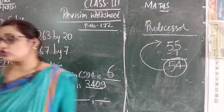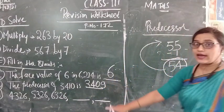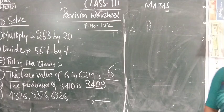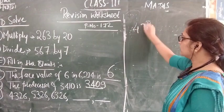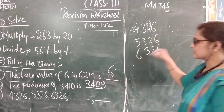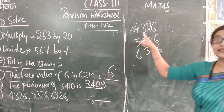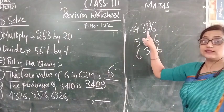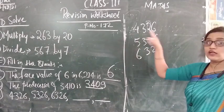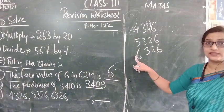Now third question. 4326, 5326, 6326 and dash and dash. Third fill in the blanks, 2 dashes are given. Just observe the series: 4, 5, 6. And it is a 4 digit number: ones, tens, hundred, thousand. Other digits are the same: 3, 2, 6. What is the difference here? 4, 5, 6. Means thousand place we have to see.